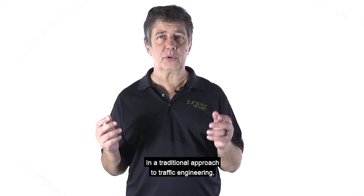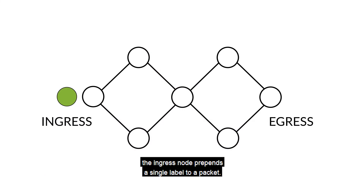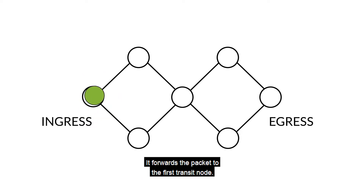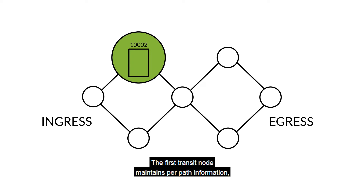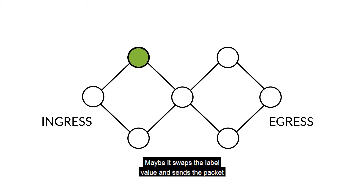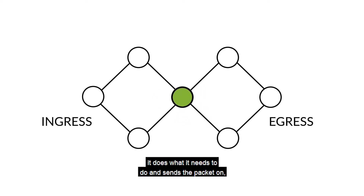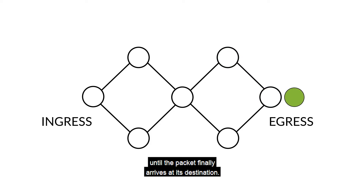In a traditional approach to traffic engineering, the ingress node prepends a single label to a packet. That label represents the entire path. It forwards the packet to the first transit node. The first transit node maintains per-path information, understands that label, and processes it. Maybe it swaps the label value and sends the packet on to the next transit node, which also maintains per-path information and does what it needs to do, until the packet finally arrives at its destination.